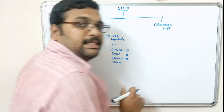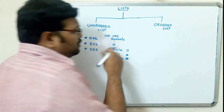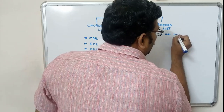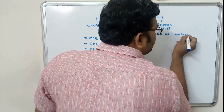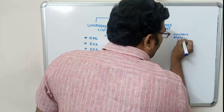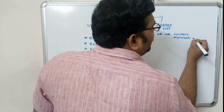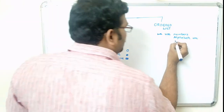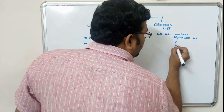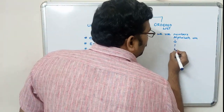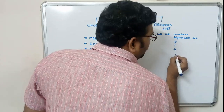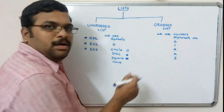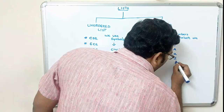Coming to the ordered list, numbering will be given. We use numbers, alphabets, etc. So here we can use either 1, 2, 3, or capital A, B, C, or small a, b, c, or Roman numerals like I, II, III, or small i, ii, iii.